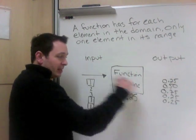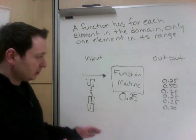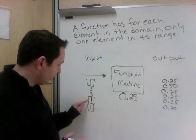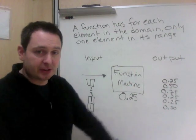Hopefully you can see, for each of the elements in the domain, I get only one possible answer. Every time I put a one in, I got exactly one answer, and that answer was 25 cents. If, for some reason, I put in a one and the broken machine gave me 30 cents, that would not be a function, because I can only have one answer for each specific domain.